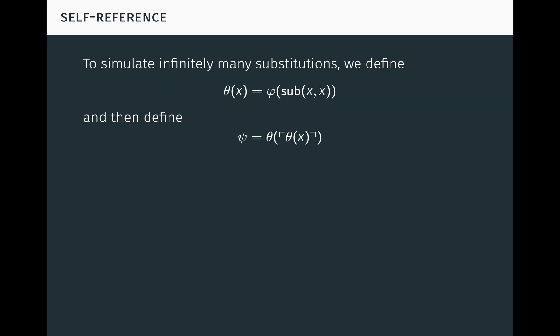To simulate infinitely many substitutions, we define theta of x to be phi of sub xx, and then define psi to be the sentence obtained by substituting theta into itself. Notice that the definition of theta includes a self-substitution operation on x within phi, using a term representing the substitution function. In the definition of psi, when we substitute theta into itself, we intuitively obtain phi applied to the very same substitution operation we just performed, namely psi. This suggests that psi should be equivalent to phi of psi.